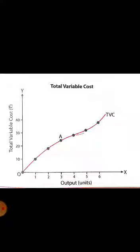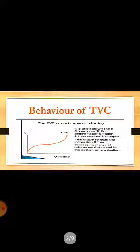Variable cost and output move together. As output increases, variable cost increases. If output is reduced, then variable cost is reduced. Now we have to analyze the total variable cost behavior. Total variable cost is upward, always like S letter which is flipped, first flatter then steeper.